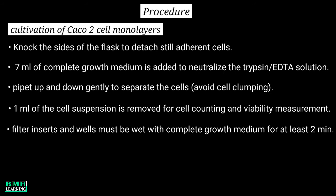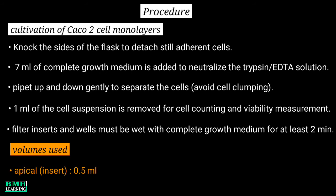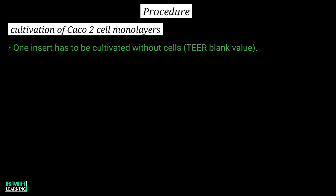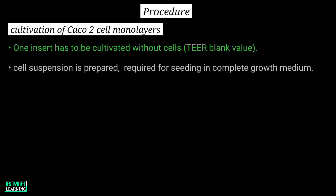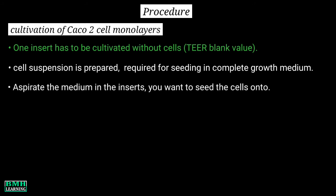The filter inserts and wells must be wet with complete growth medium for at least 2 minutes. Volumes used are: 0.5 ml for apical and 1.6 ml for basolateral. Keep in mind that one insert must be cultivated without cells, as this is needed for measurement of the TEER blank value. The cell suspension is then prepared for seeding in complete growth medium.